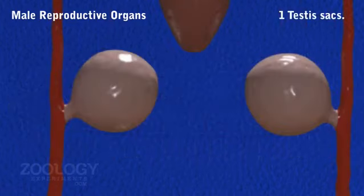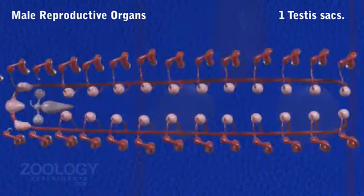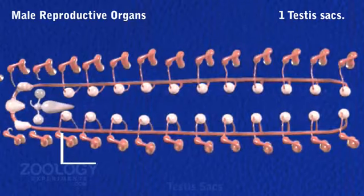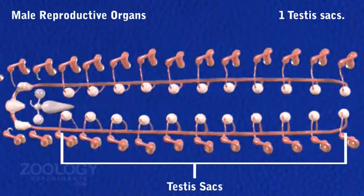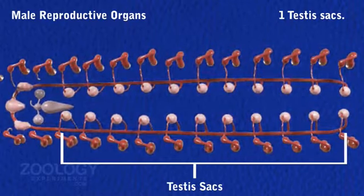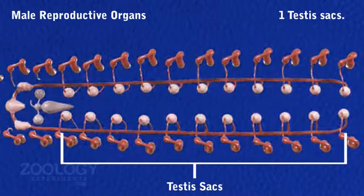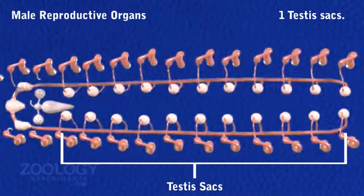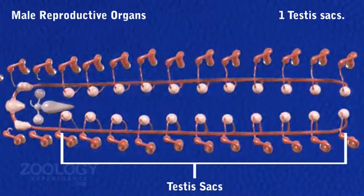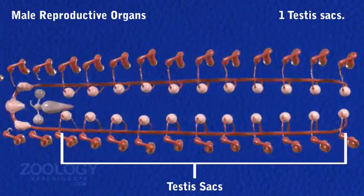Testis sacs: There are 11 pairs of small spherical testis sacs situated in the 12th to 20th segments. They are located ventrally, one on either side of the ventral nerve cord.